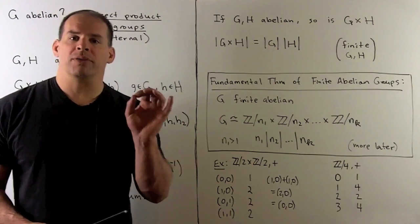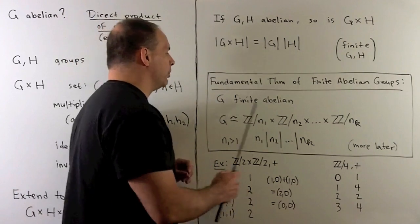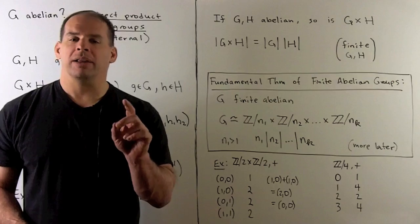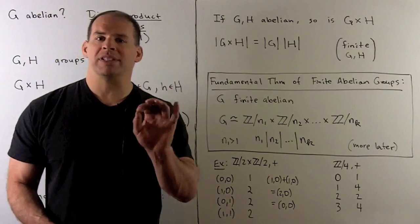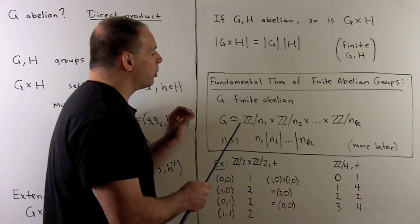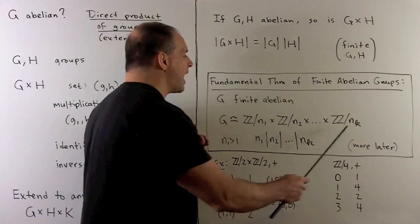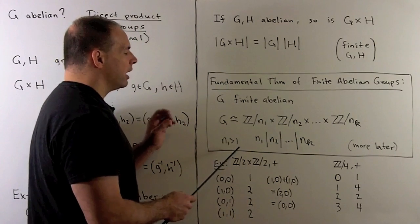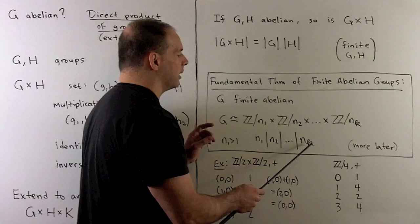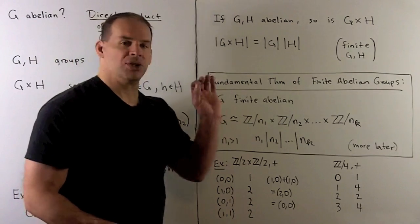Here's the punchline. Once we have the direct product, we have the fundamental theorem of finite abelian groups. This says if we have G a finite abelian group, then G is isomorphic - we'll see more of isomorphism later, but this just means it's the same group with different labels - to a direct product of cyclic groups, these modular integer groups. The condition is that first number be greater than one, and then N1 divides N2, N2 divides N3, all the way up through NK-1 divides NK. We're not going to prove this now, probably much later, but we'll use this because it's good for examples.